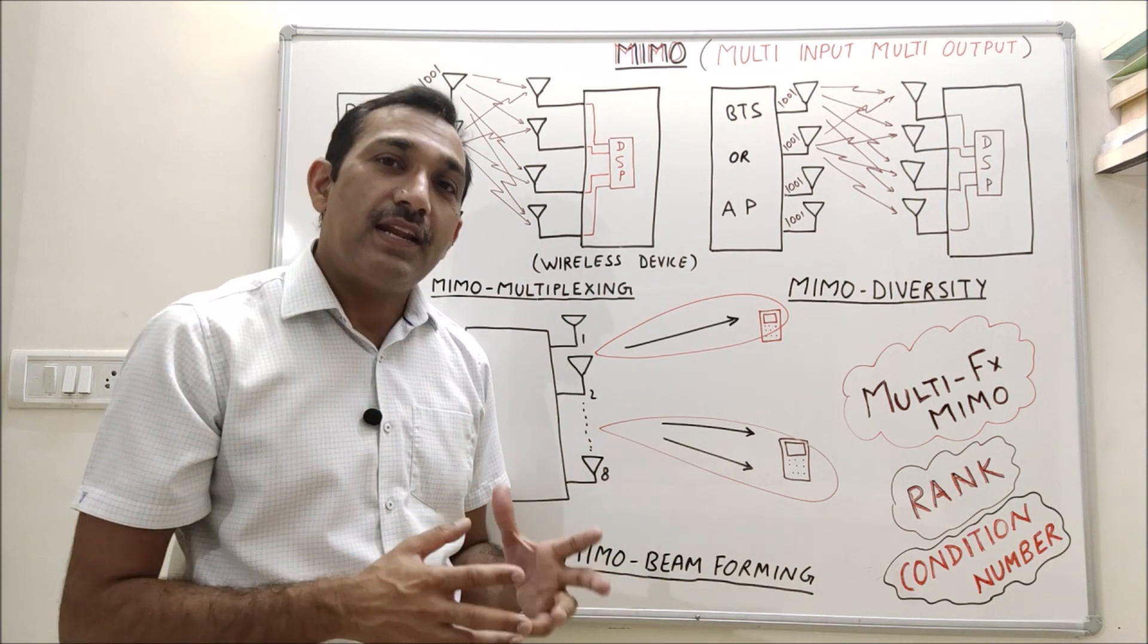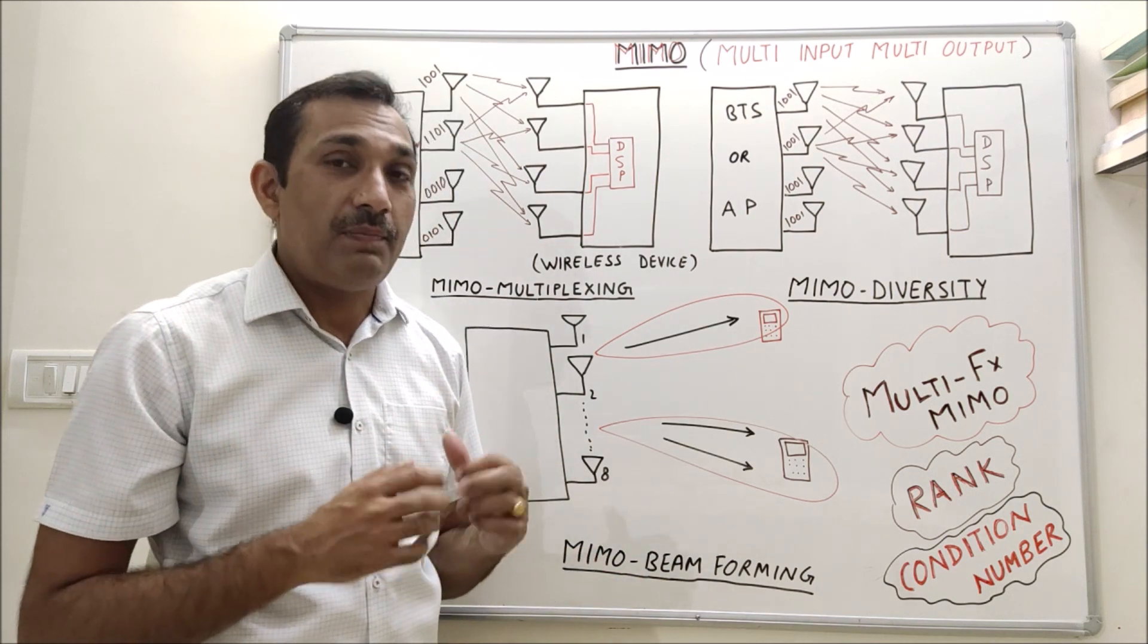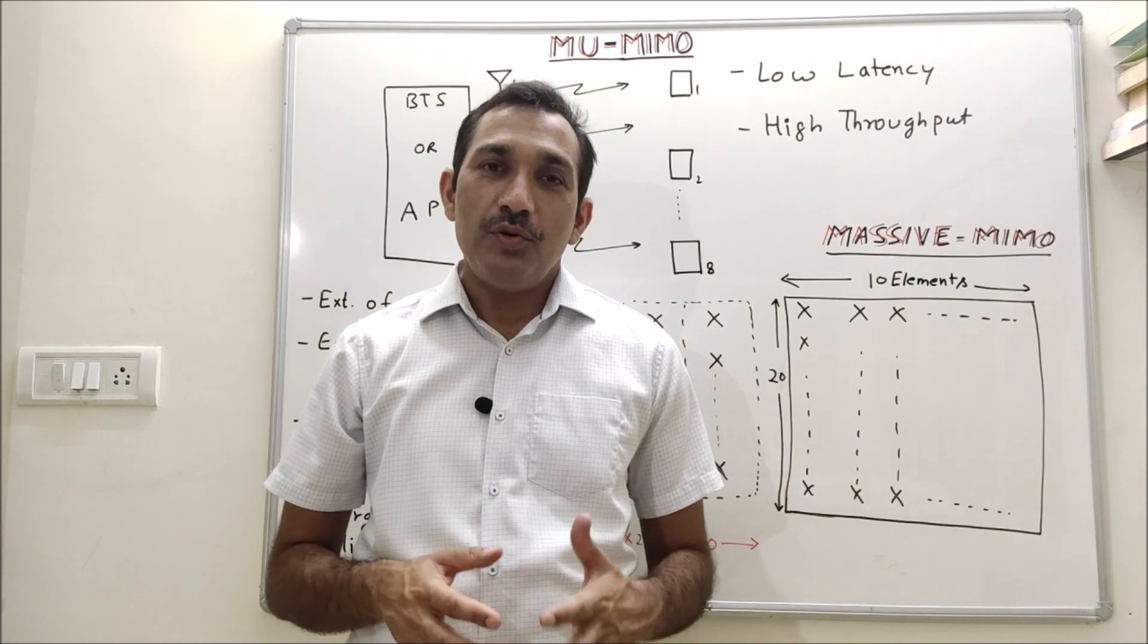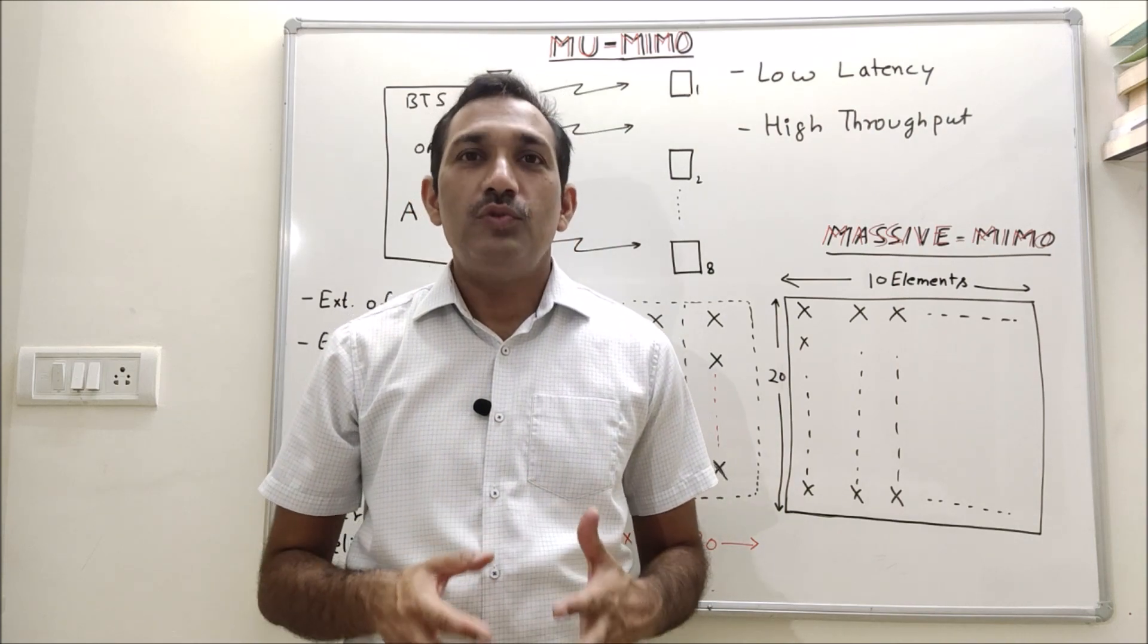For ideal channel, condition number is 0 dB but that is not practically possible. Any number which is less than 10 is considered good, but if it is going more than 15 or 20 then channel condition is not good for spatial multiplexing.